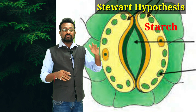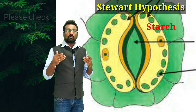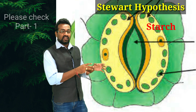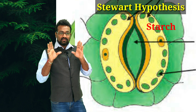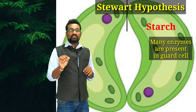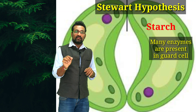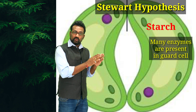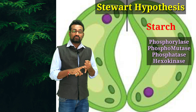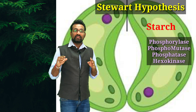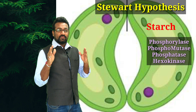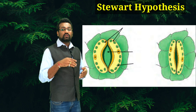Photosynthesis produces starch molecules as a product. Starch is a polysaccharide molecule — poly means many monosaccharides are inside the starch molecule, and starch contains many glucose molecules. In the guard cell, various enzymes are present. According to Stewart, in the guard cell, starch produced by photosynthesis is present along with different enzymes such as phosphorylase, phosphomutase, and hexokinase. These enzymes perform their role and obviously have a role in the opening and closing of stomata.